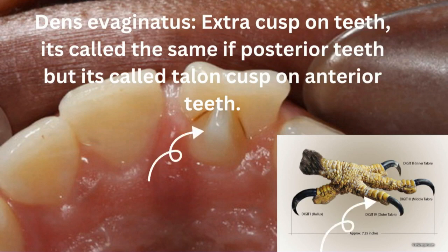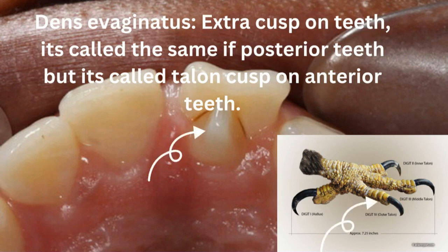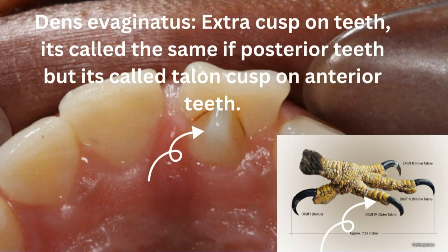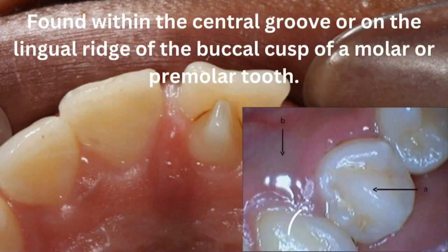Dens evaginatus means 'outside' — it is having an extra cusp above the tooth. It is called dens evaginatus on posterior teeth, but called talon cusp if it is on the anterior teeth, and can also be named leaning premolar if present on the premolars. It is called talon cusp on anterior teeth because it looks just like the talon of an eagle, as you can see in the picture.